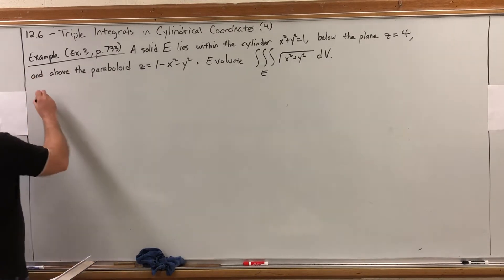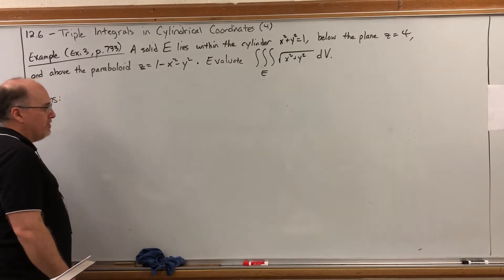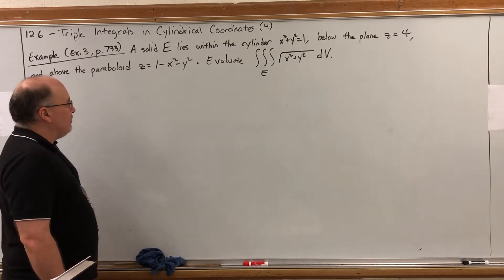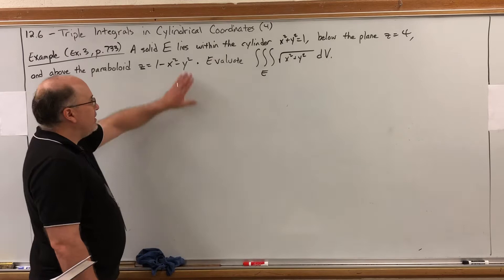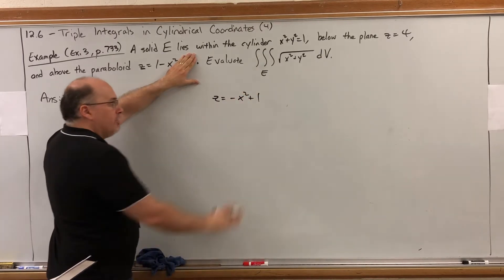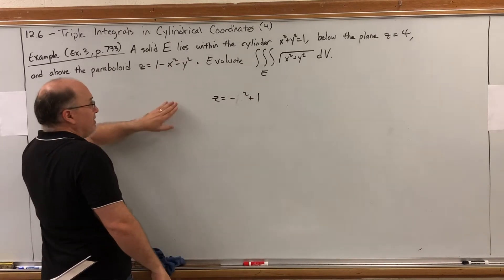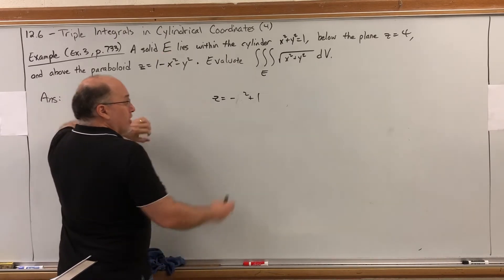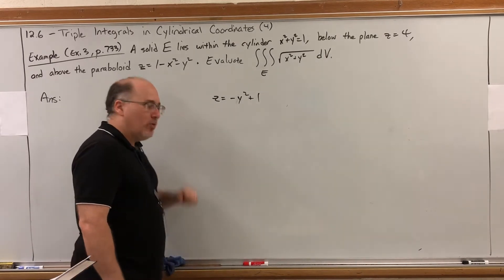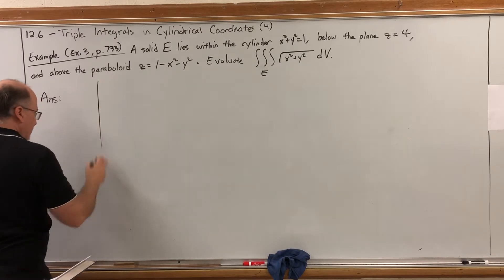Before setting up limits of integration, we need to see what this solid looks like. Starting with the paraboloid — it's an upside-down paraboloid up 1. In the xz-plane, let y = 0: z = 1 − x², an upside-down parabola up 1. In the yz-plane, let x = 0: z = 1 − y², again an upside-down parabola up 1. So we get an upside-down paraboloid with vertex at z = 1.